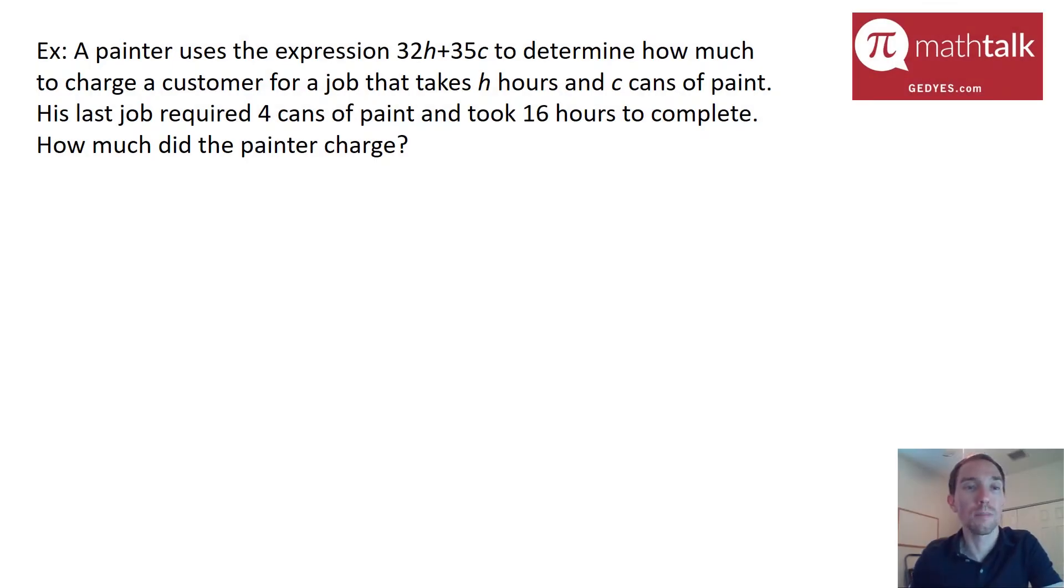Our first example says a painter uses the expression 32H plus 35C to determine how much to charge a customer for a job that takes H hours and C cans of paint. His last job required four cans of paint and took 16 hours to complete. How much did the painter charge?